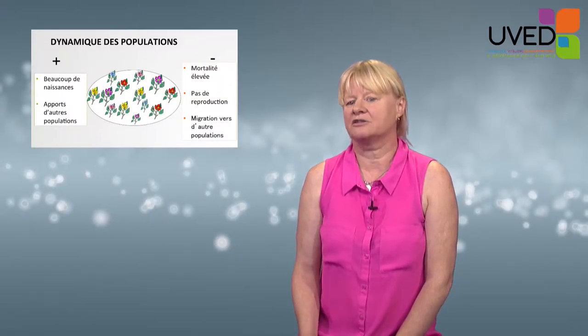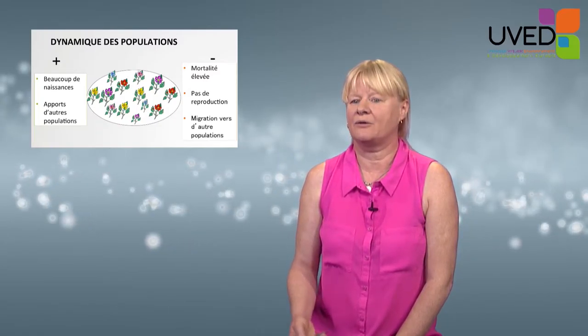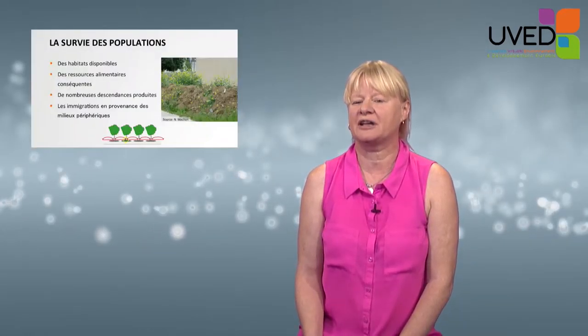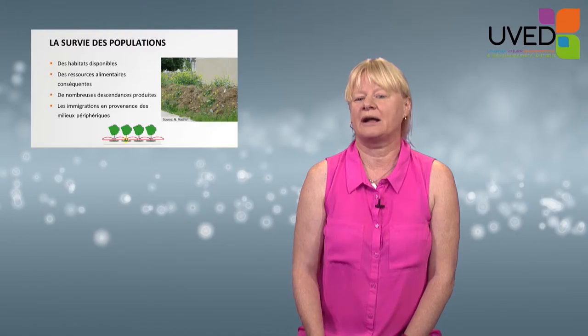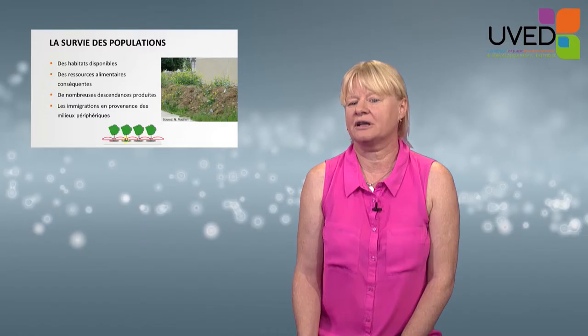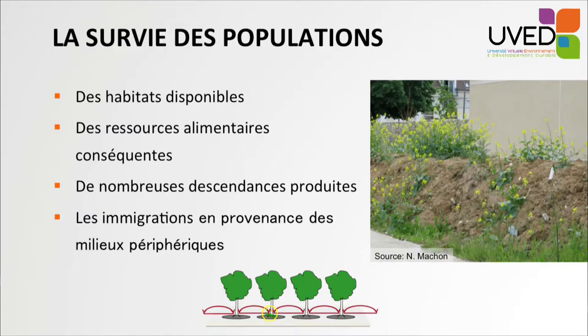The functioning of a population depends on a number of factors. The plants will grow when many plants are being generated; it decreases when other populations invade the area, and there is a decrease when mortality is high and some individuals migrate to different populations. Survival of populations is conditioned by the presence of available habitats, the availability of nutrients, and the numerous offspring produced, and also possibly immigration coming from peripheral areas.